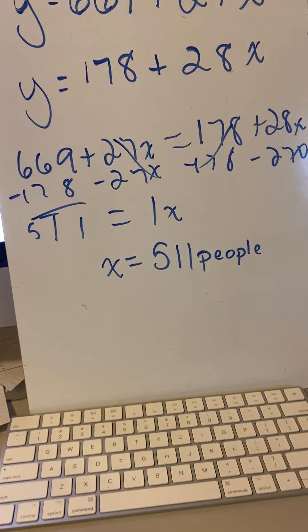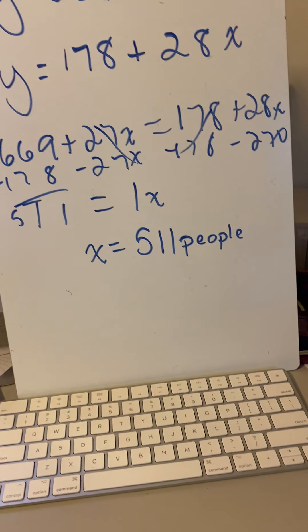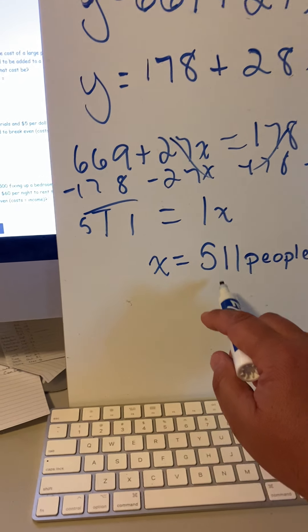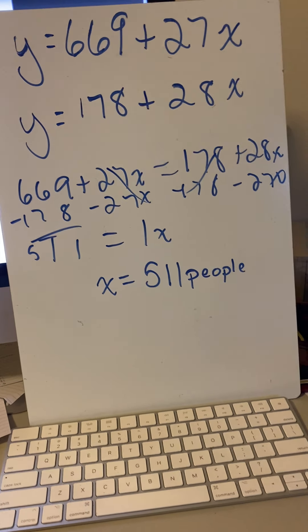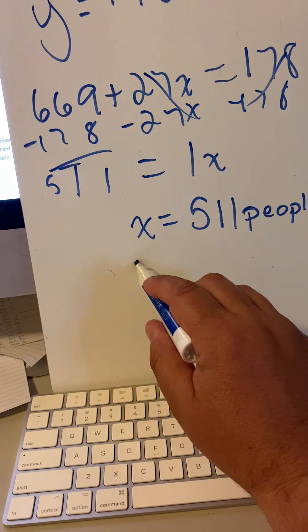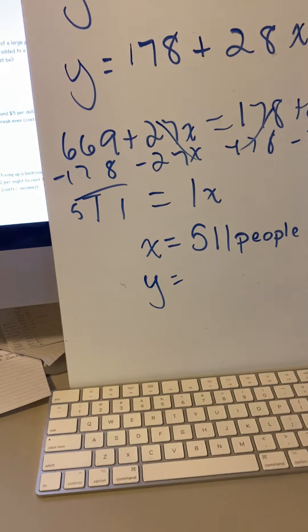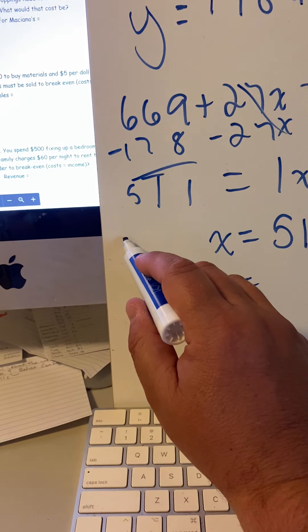What is the cost for this? Well, that's where you've got to take 511 and substitute it in for the X to find out what Y would be. Let's take 27 times 511.